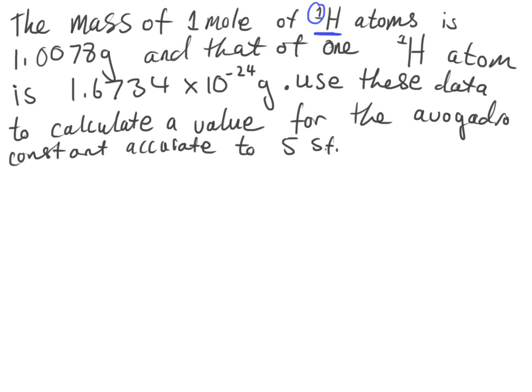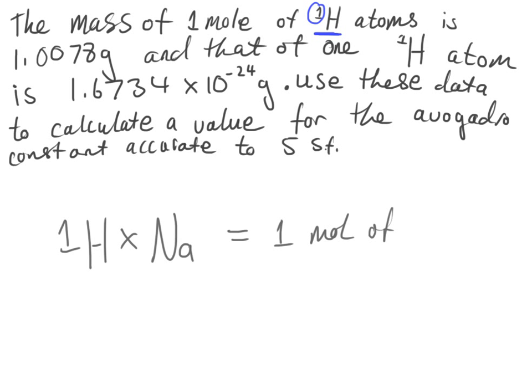Thinking about this question: one mole of a substance basically means — let's say you have one particle of that substance, so one of these hydrogen atoms. If you had one particle of this substance, to get one mole of that particle we'd have to multiply it by the Avogadro constant, represented by Nₐ, and this would give you one mole of the substance.